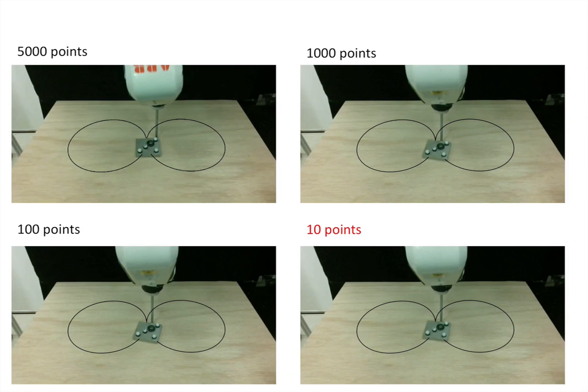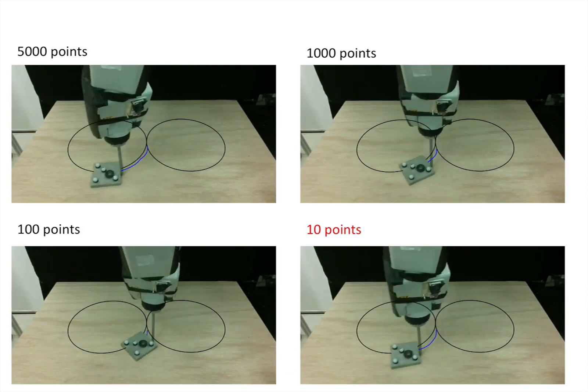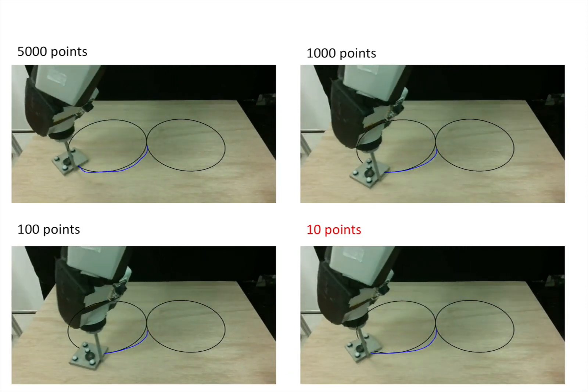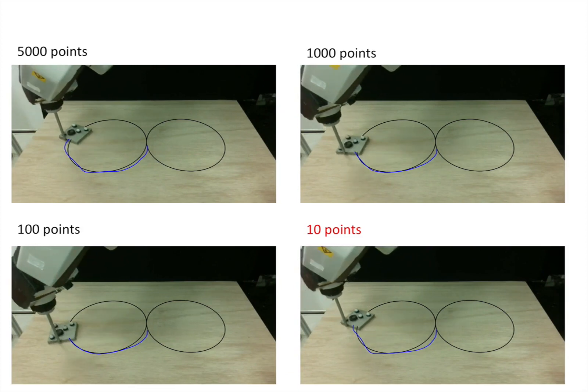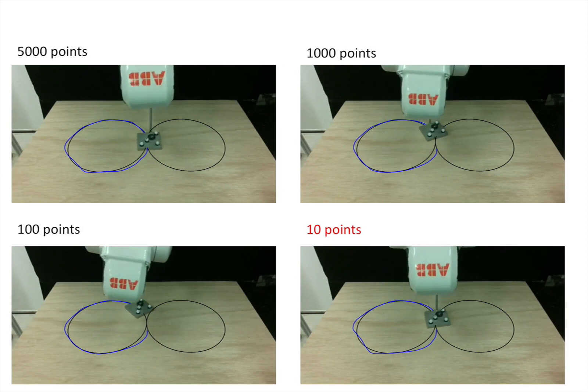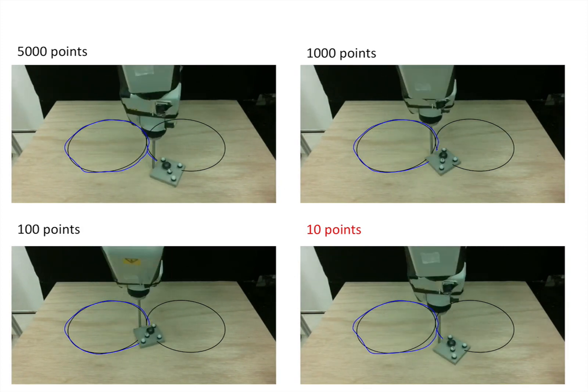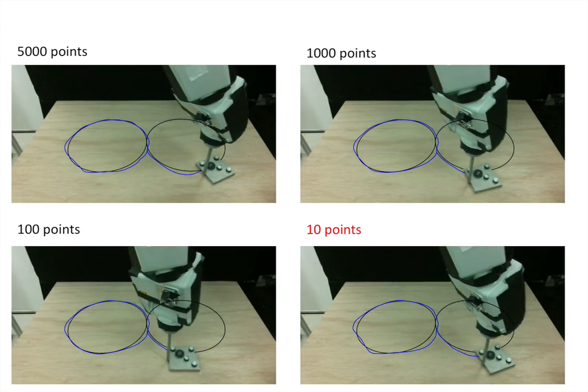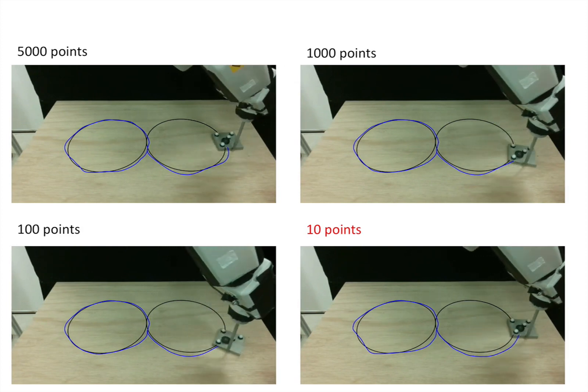Using our model-based learning approach, we are able to perform accurate trajectory tracking tasks using a very small amount of data. For example, in the case of tracking this particular circular trajectory, we found that only 10 randomly selected data points were required to stabilize the system.